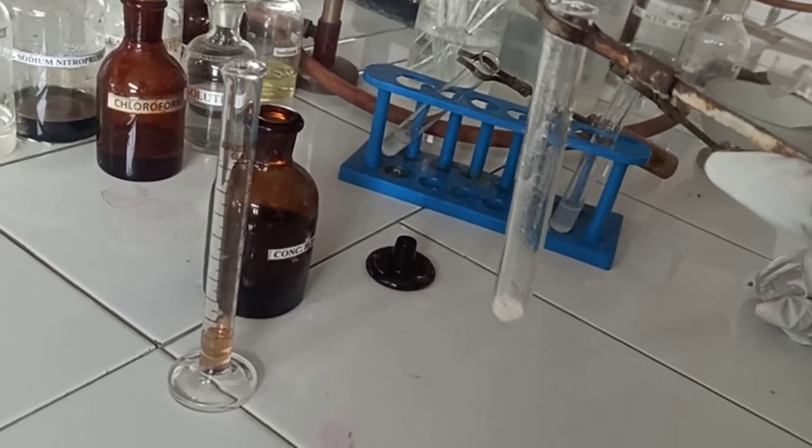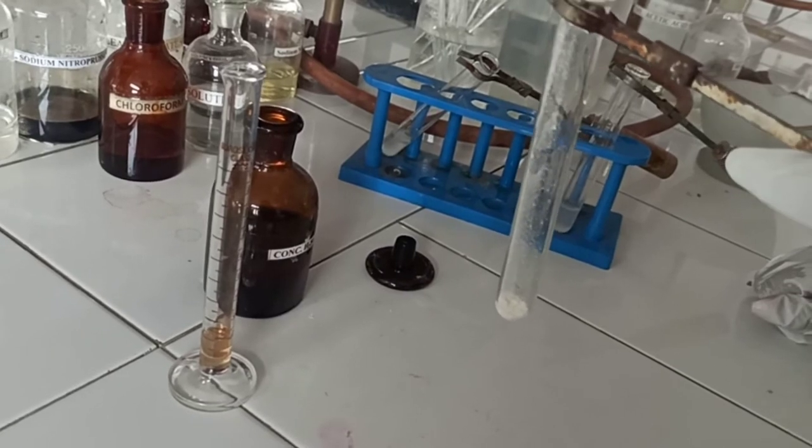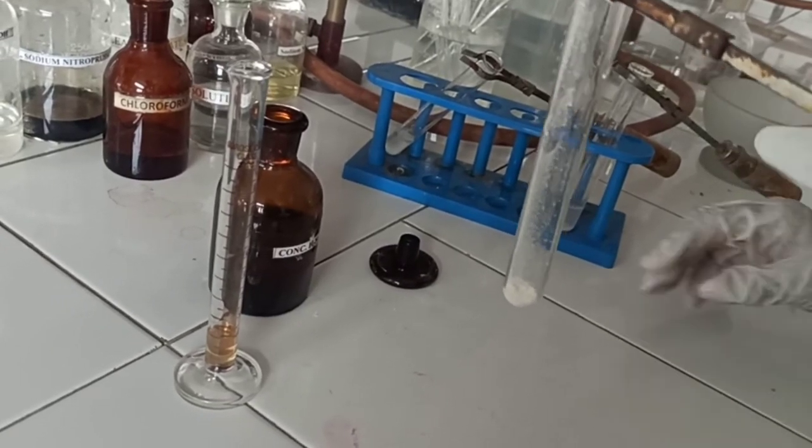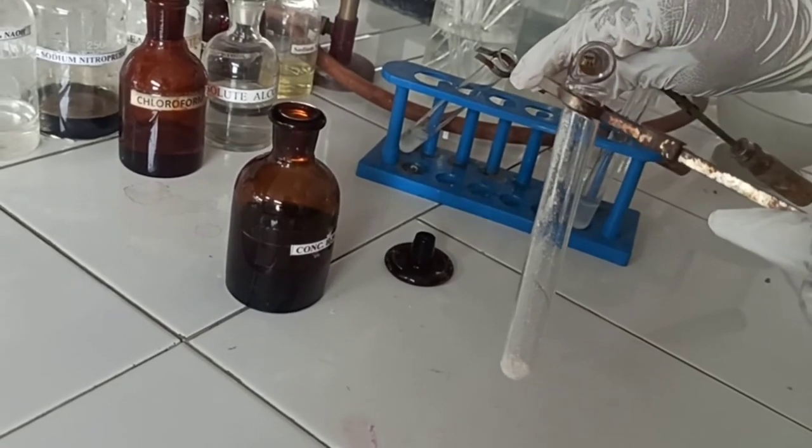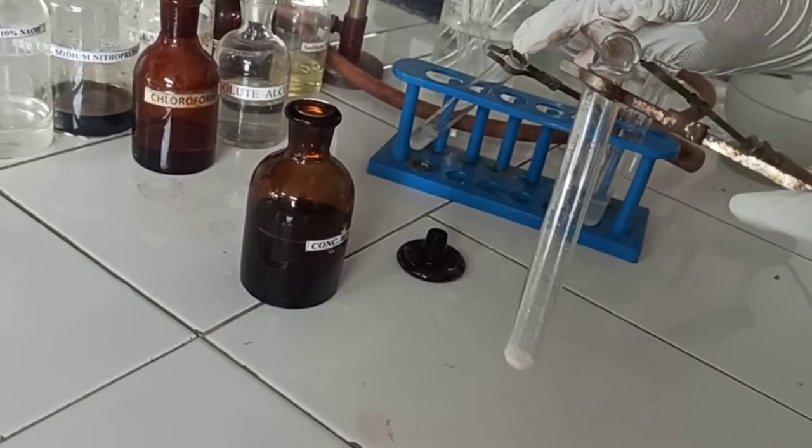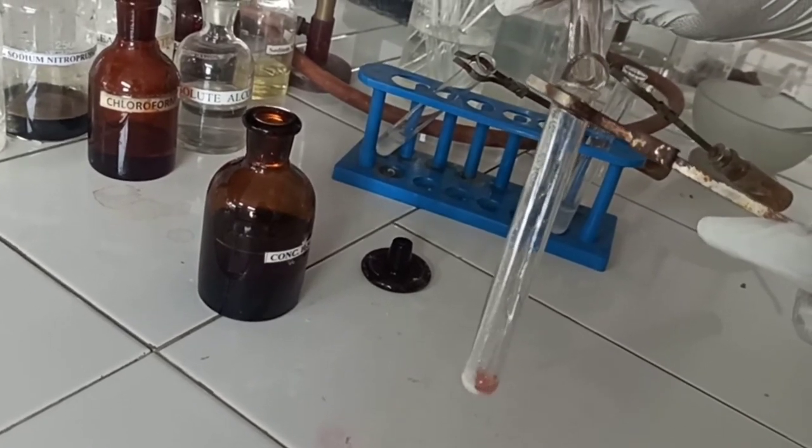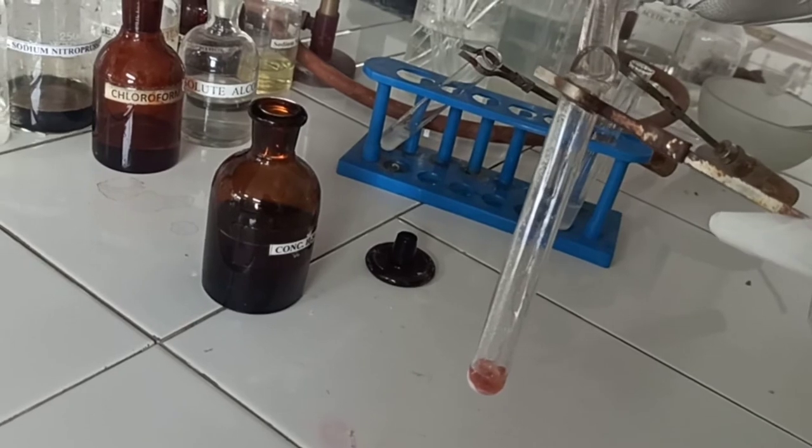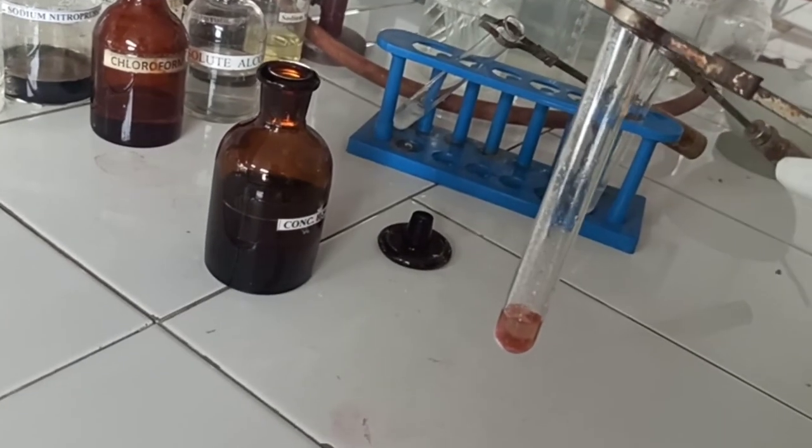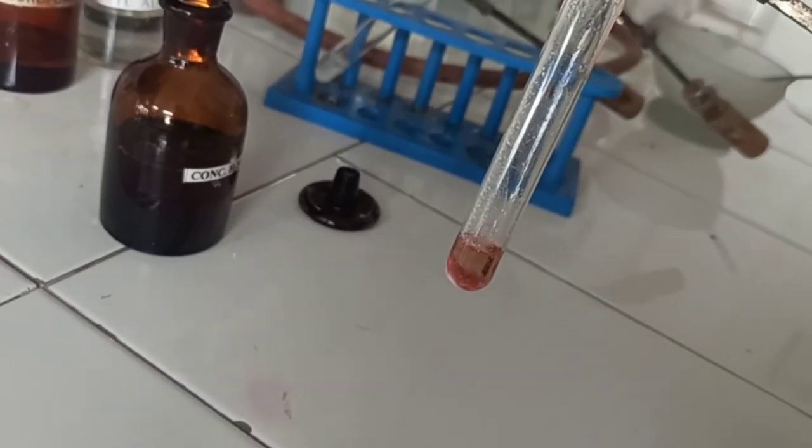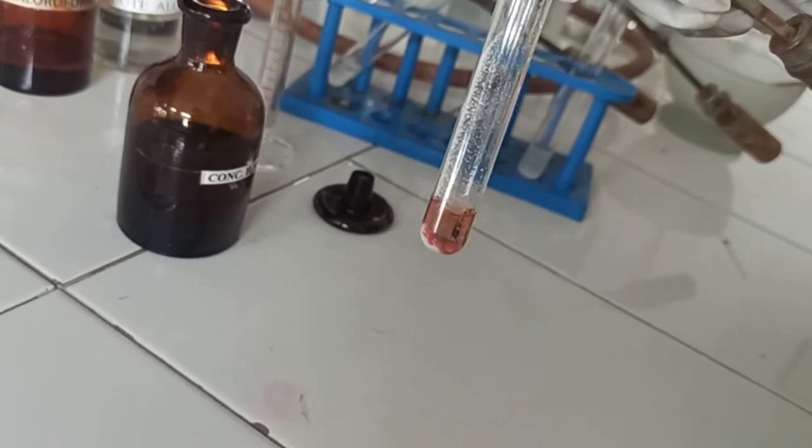Test A: We have to take 2 mg of drug and we have to add 1 ml of sulfuric acid in that. Then we have to stand it for 5 minutes. So we added sulfuric acid. See we get a red color which is already produced. So we get a red color when adding sulfuric acid to our drug.